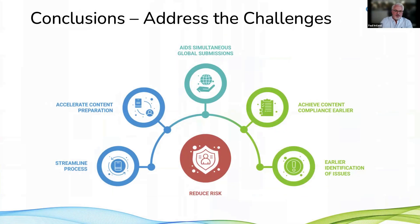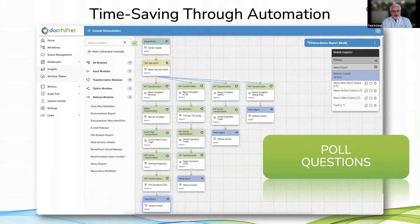In conclusion, everything we're talking about here has an aim of reducing risk — streamlining your process, identifying issues earlier to give yourselves more time, achieving content compliance earlier, and helping you achieve simultaneous global submissions by creating multiple renditions simultaneously. The idea is to accelerate how long it takes to prepare all of that content. If you're interested in a more detailed conversation or have any questions, please reach out through the link in the chat. Thank you all for your time — hopefully speak to some of you again soon either one-on-one or at one of the upcoming conferences.